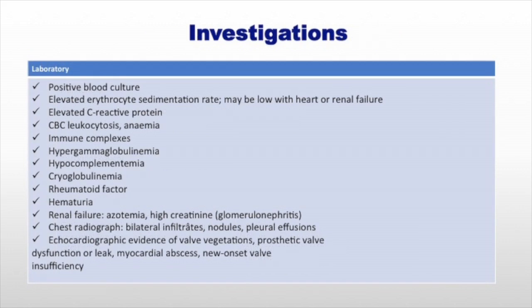On investigations, we have specific investigations that have to be done: blood culture and echocardiogram. For blood culture, it is advised that you should take three to five blood cultures and follow standard aseptic technique so that you don't get false negative results. About 90% of positive organisms are usually isolated from the first two blood cultures. For echocardiogram, when you do the echo you can see vegetation and features of valvular insufficiency such as vegetation and destruction.